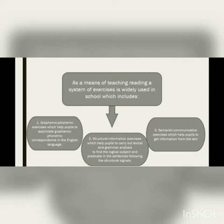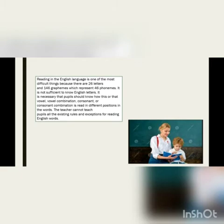Semantic communicative exercises help pupils to get information from the texts. Reading in the English language is one of the most difficult things because there are 26 letters and 146 graphemes, which represent 46 phonemes. It is not sufficient to know English letters; it is necessary that pupils should know how a given letter or letter combination is read at different positions in words. The teacher cannot teach pupils all the existing rules and exceptions for reading English words.